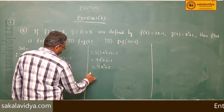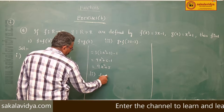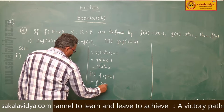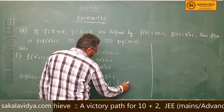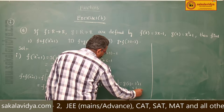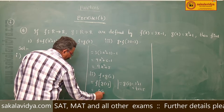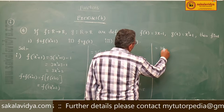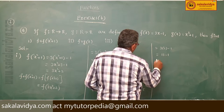Second one: F circle G of 2. We can find this directly. G of 2 means 2 squared plus 1, which is 4 plus 1 equals 5. So G of 2 is 5. Therefore F of 5 equals 3 times 5 minus 1, and 15 minus 1 is 14.